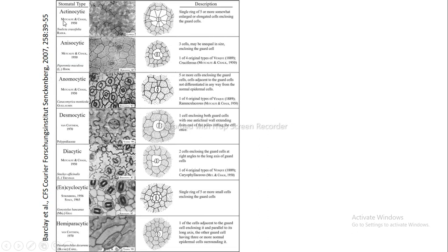The first type is actinocytic stomata, where a single ring of five or more cells that are enlarged and elongated compared to the guard cells surrounds the pore. When a guard cell is surrounded by a ring of five or more enlarged subsidiary cells, this arrangement is known as actinocytic.